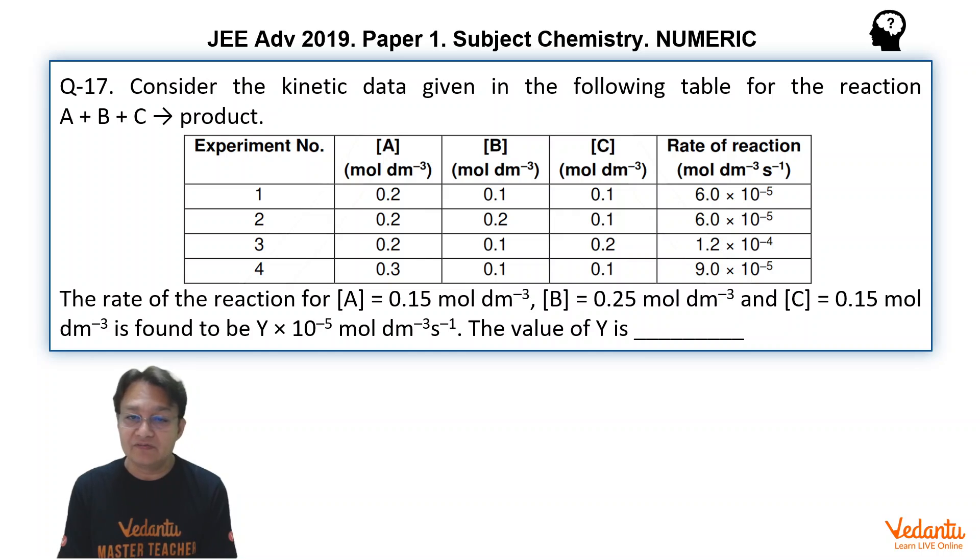6 into 10 to the power of 5. That clearly gives the idea that upon increasing the concentration 2 times, still the rate is not changing. That means order with respect to B is 0, because the concentration of B is not affecting the rate of reaction.